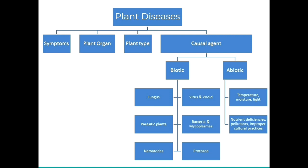There are tens of thousands of diseases which must be classified in order to identify and manage them. Like crops, weeds and insects, plant diseases can also be classified in several ways. The operational categories include classification based on symptoms, the plant organ afflicted, plant category, and the causal organism or factor.